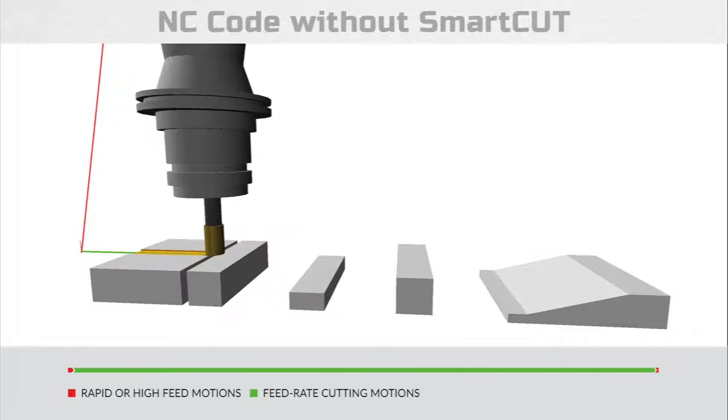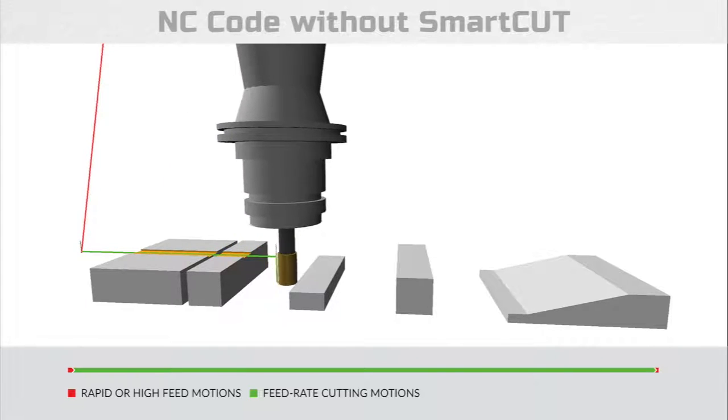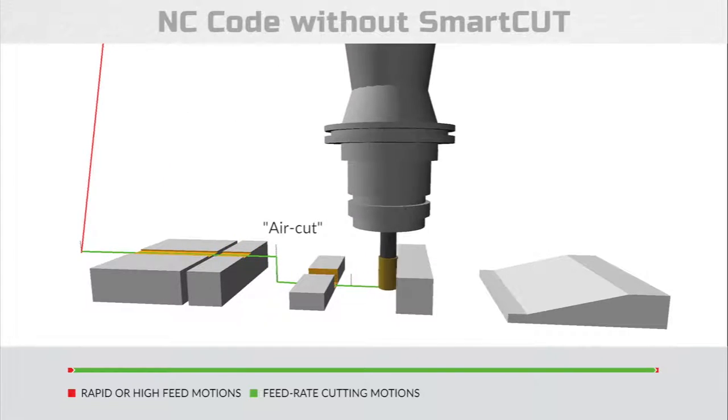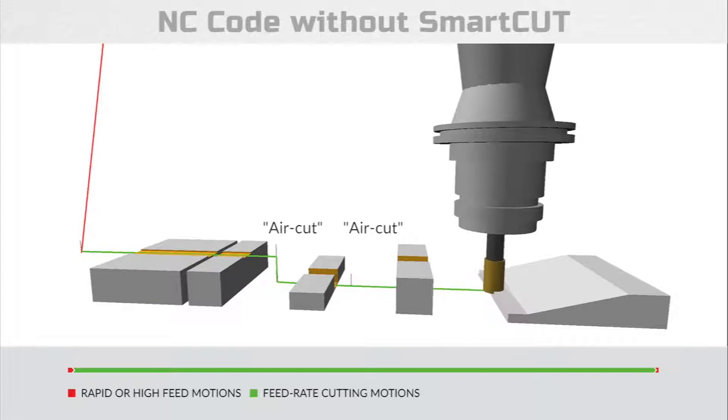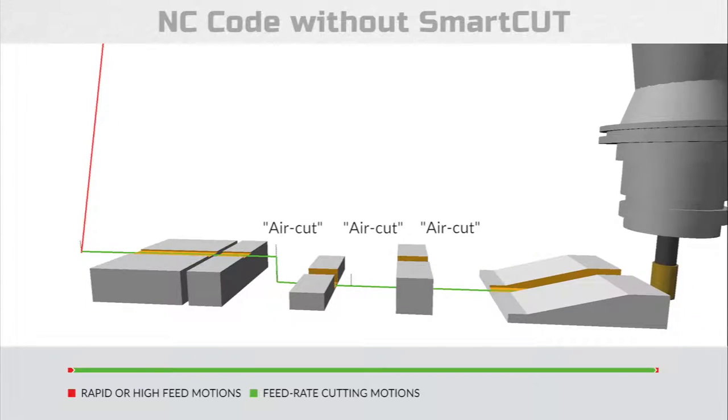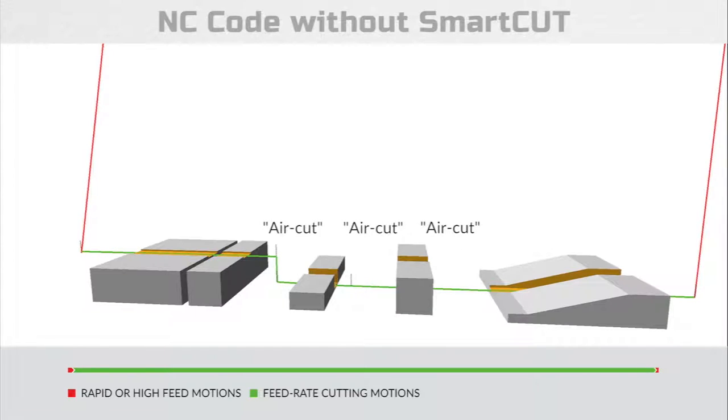In this example without SmartCut enabled, you can see that only one feed rate was set and the tool is actually at cutting feed rate while not engaged with the part. This issue is referred to as an air cut.